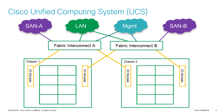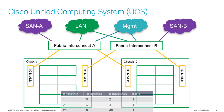All the intelligence has been put on the fabric interconnects, which means the entire UCS domain — which can comprise up to 20 chassis and 160 servers in total — can be managed from a single IP address. That gives you not only reduced cabling and interlink complexity, but also a significantly reduced number of IP addresses that you need.